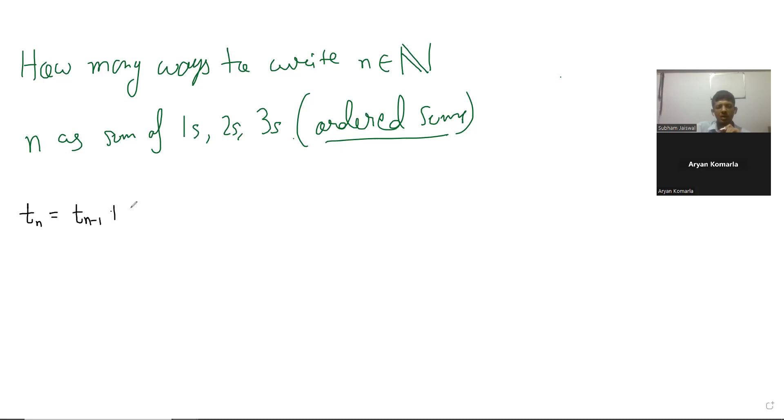So t_n = t_{n-1} + t_{n-2} + t_{n-3} for all n greater than or equal to 4. Yes, this is straightforward to show.